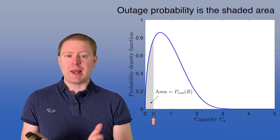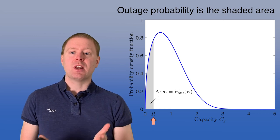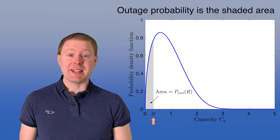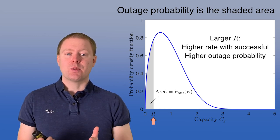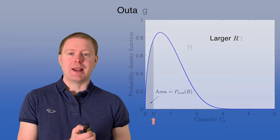And the smaller r is, the smaller the outage probability is going to be, but also the lower the information rate is going to be when you're successful. So there is a gamble here between having a high rate but having also high outage.